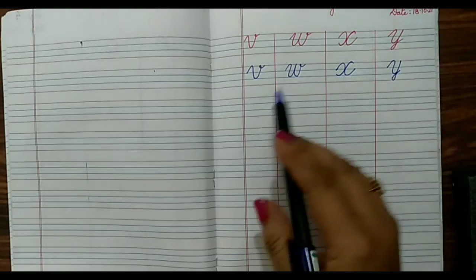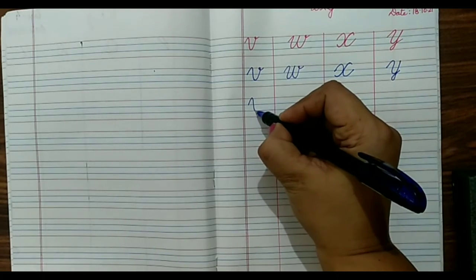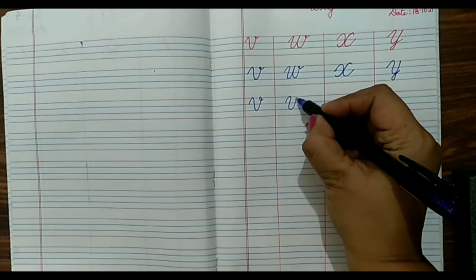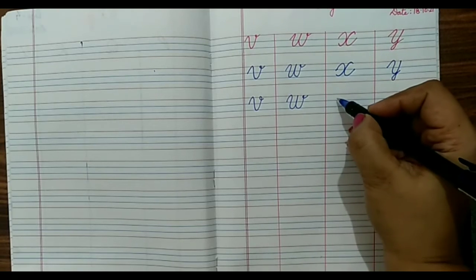That is how we write V, W, X, Y. Let us see once again. For W also, we will go curved, touch two times the red line and make a tail.